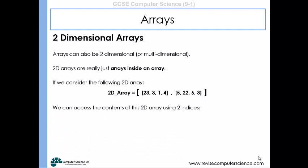We can access the contents of this 2D array using two indices. 2D_array[0] will access the first array within it. 2D_array[1] will access the second array within it. 2D_array[0][0] would access the number 23, because the first indice says which array we're looking at—that's the first array. The second indice looks at which element within that array we're looking at. The first element is 23, so that's what we're accessing when we use [0][0] as the indices on our 2D array.